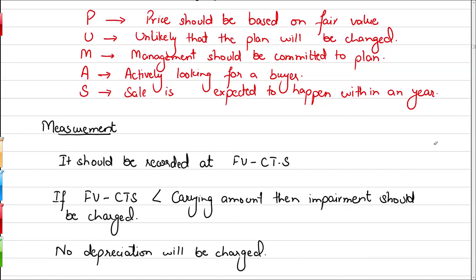To summarize, this accounting standard covers non-current assets held for sale and discontinued operations. The main working relates to the held-for-sale part, while the discontinued operation is simply about presentation in your income statement, separately presented in your profit and loss. This has been a short overview of IFRS 5 — non-current assets held for sale.